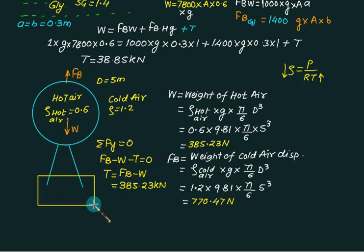Suppose this hot balloon is provided with extra payload equal to 385.23. In that case, this balloon is in equilibrium condition, so the balloon will maintain this height.